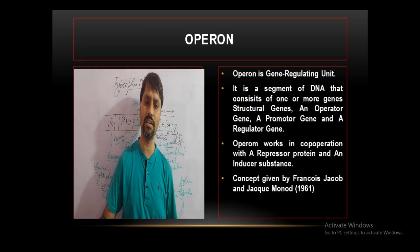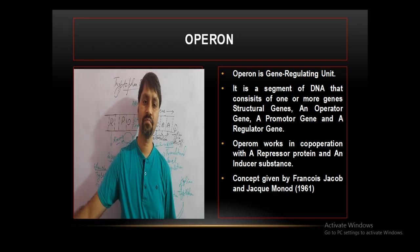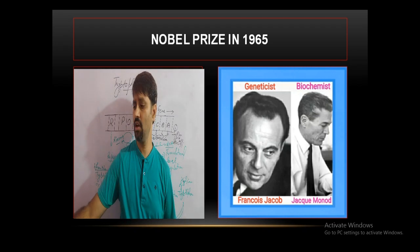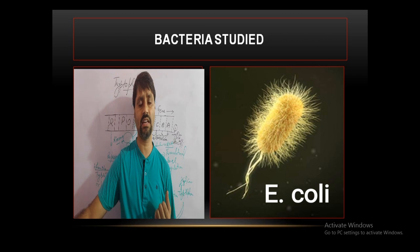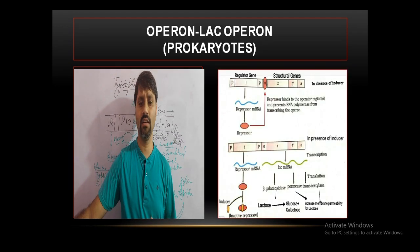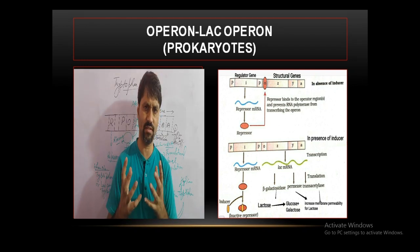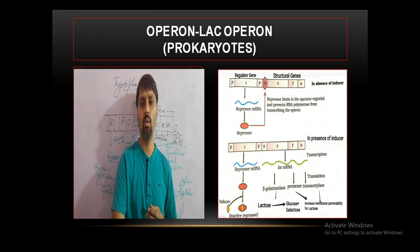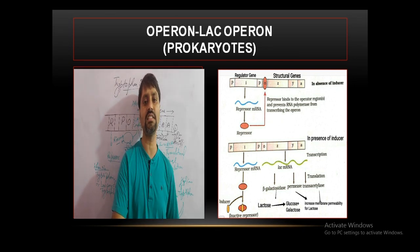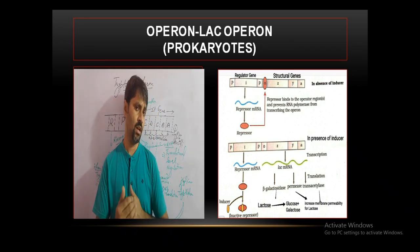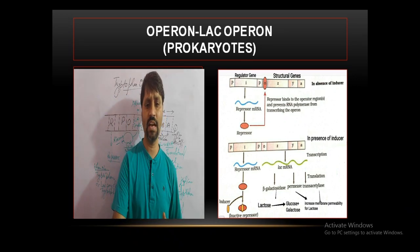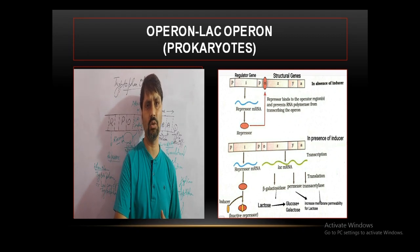The operon is a gene-regulating unit. The concept was given by François Jacob and Jacques Monod while working with E. coli bacteria. It consists of four types of genes, which we studied in the lac operon: one operator gene, one promoter gene, one regulator gene, and structural genes.